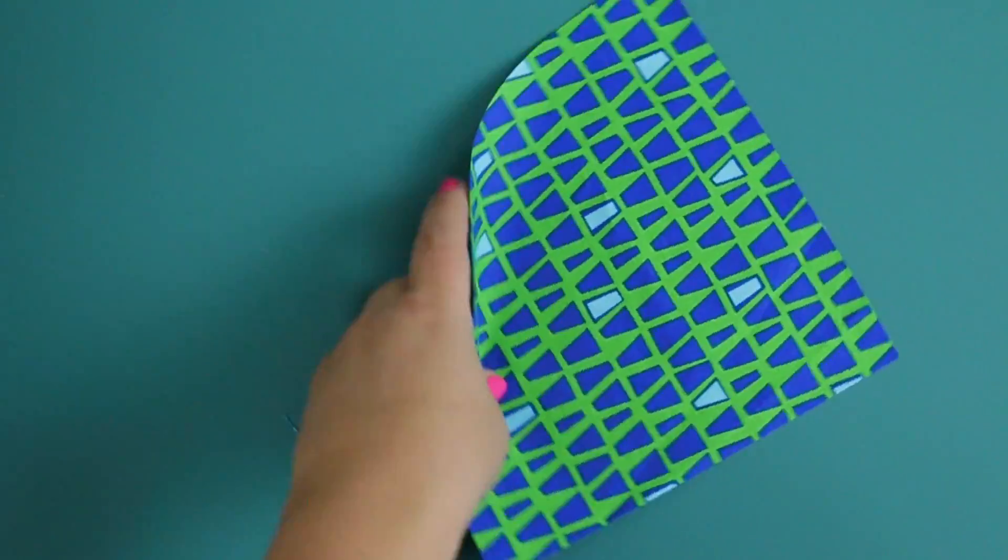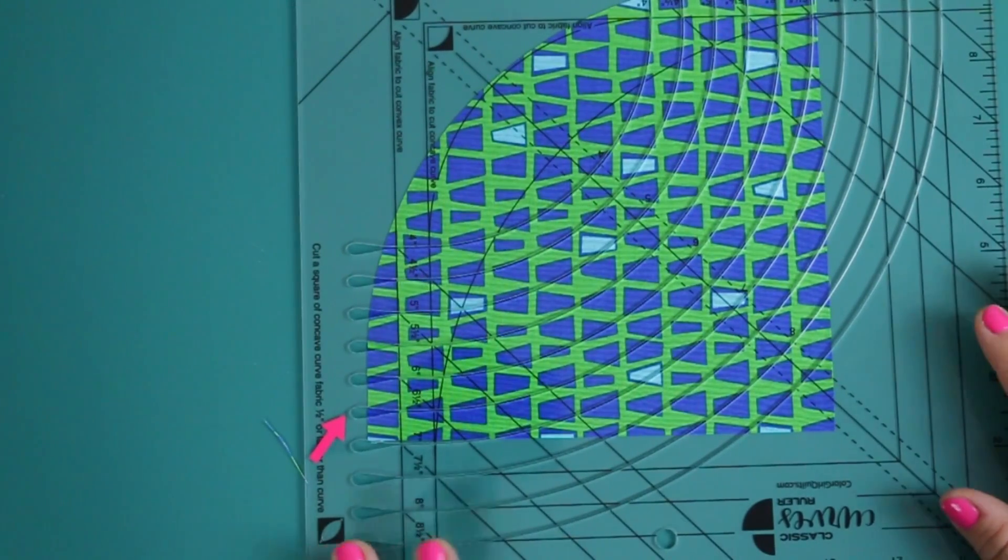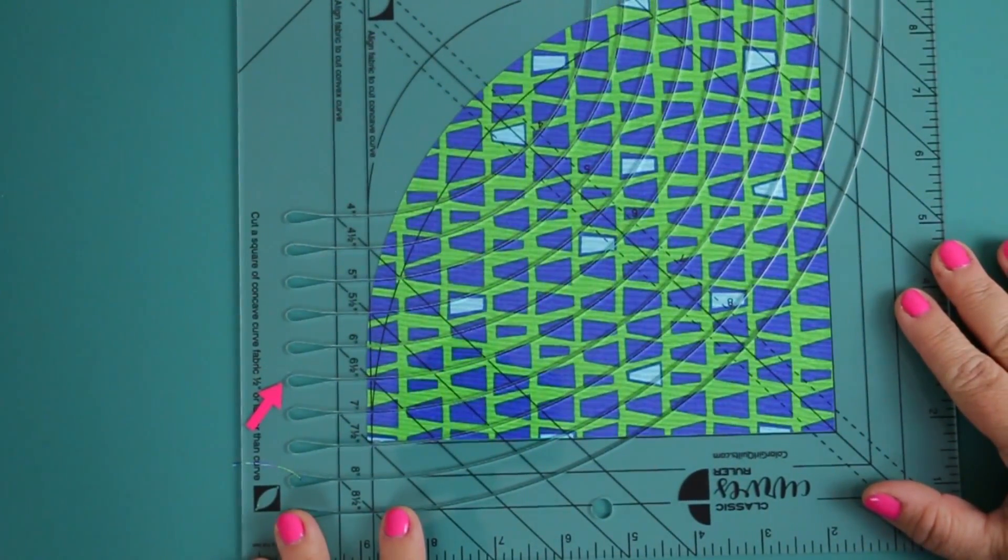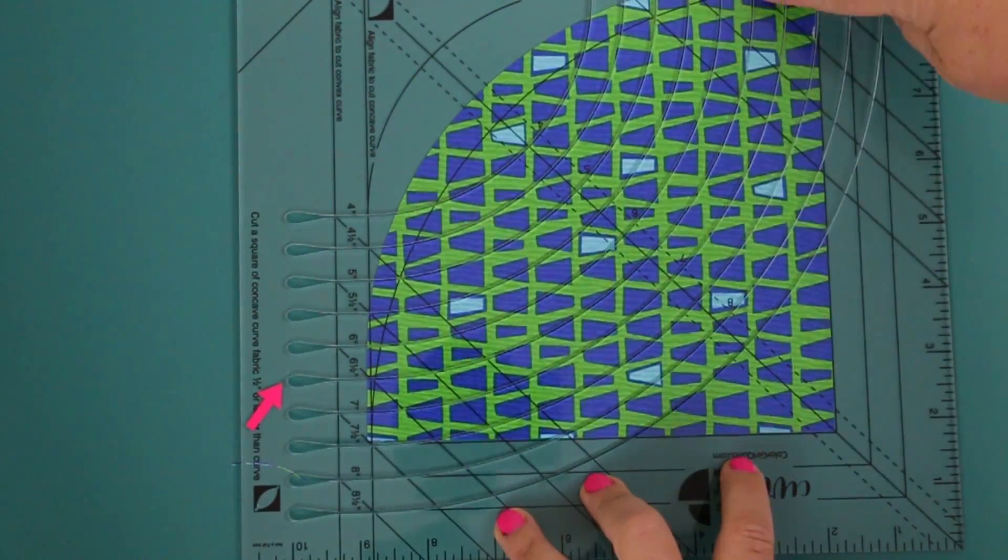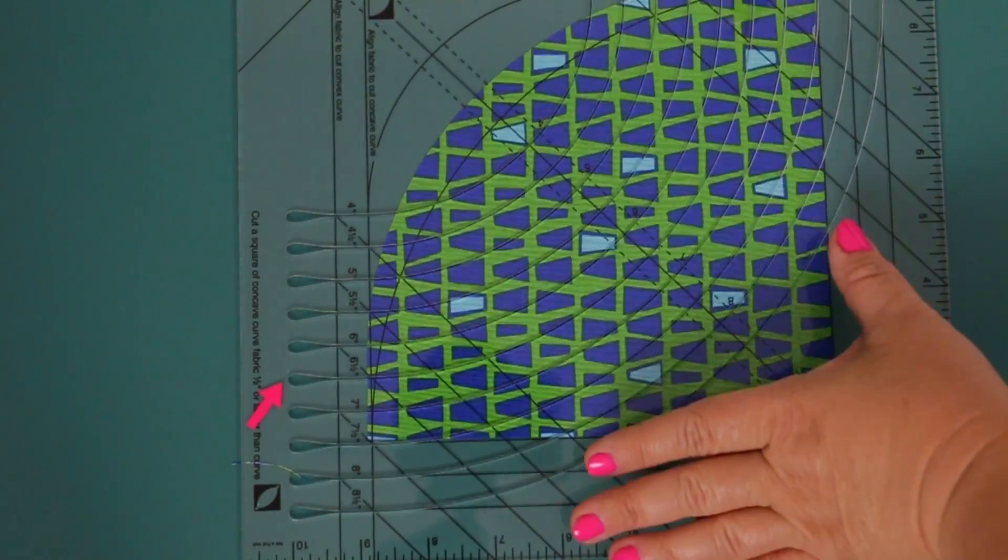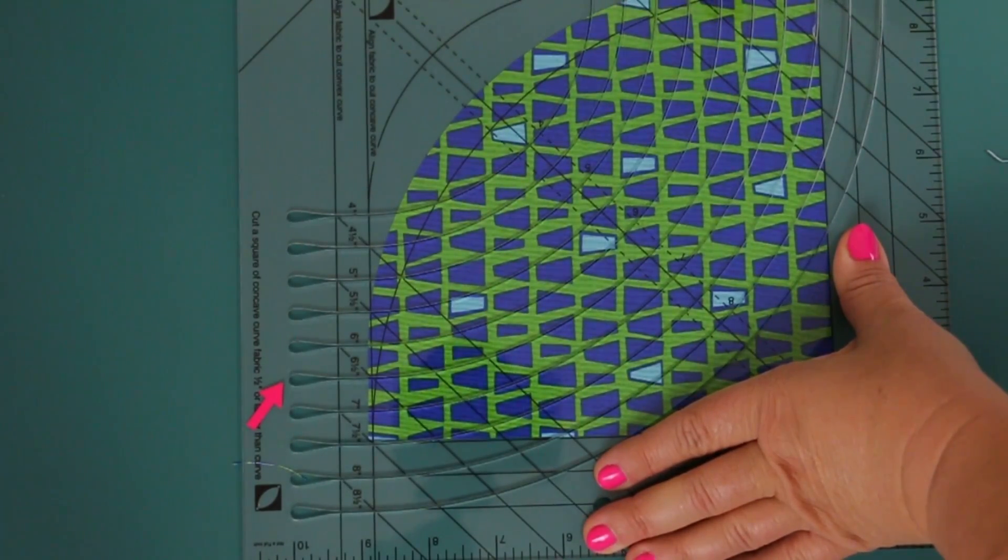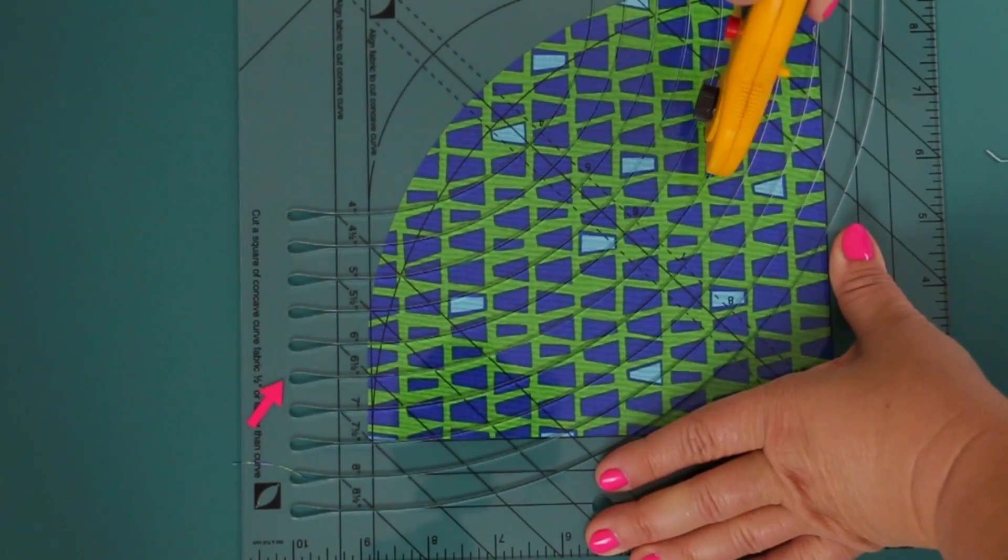Now you're going to take that concave curve and put it to the side. And the convex, we're going to now cut a second one, but we're actually creating a second concave curve. Now, in order to do this, remember you want your square a little bit larger, about an inch or so larger. So we're going to line up the seven and a half inch lines with the two straight edges.